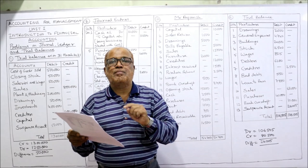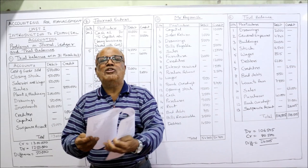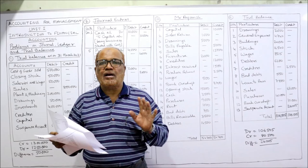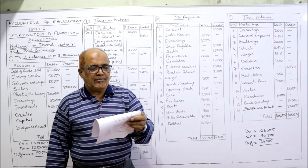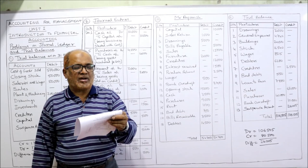The third problem asks to prepare ledger accounts — I'll explain that in the next video. Problems three through nine will be done in the next video. In this video, I will now complete the 10th and 11th problems. Problem 10: prepare a trial balance as on 31st July 2019 from the following balances of Mr. Raj Vansh, the owner of the business.